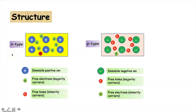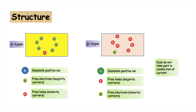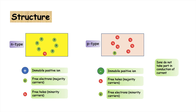N-type semiconductors are formed by adding pentavalent impurities to silicon. There are immobile ions, free electrons which are the majority carriers, and thermally generated free holes which are the minority carriers. Whereas P-type semiconductors are formed by adding trivalent impurities to silicon. There are negative ions, free holes which are the majority carriers, and thermally generated free electrons which are the minority carriers. It may be mentioned here that ions do not take part in the conduction of current; therefore, let us consider the free electrons and holes only.